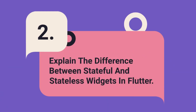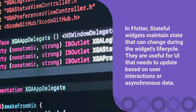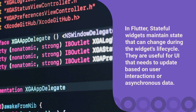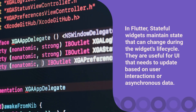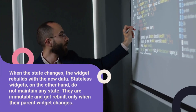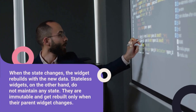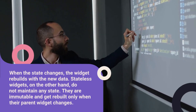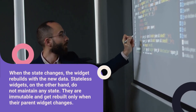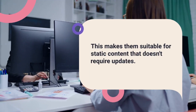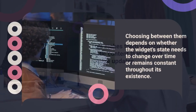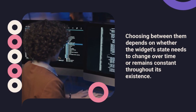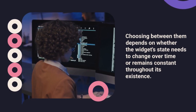Question 2: Explain the difference between stateful and stateless widgets in Flutter. In Flutter, stateful widgets maintain state that can change during the widget's lifecycle. They are useful for UI that needs to update based on user interactions or asynchronous data. When the state changes, the widget rebuilds with the new data. Stateless widgets, on the other hand, do not maintain any state. They are immutable and get rebuilt only when their parent widget changes, making them suitable for static content that doesn't require updates. Choosing between them depends on whether the widget's state needs to change over time or remains constant.